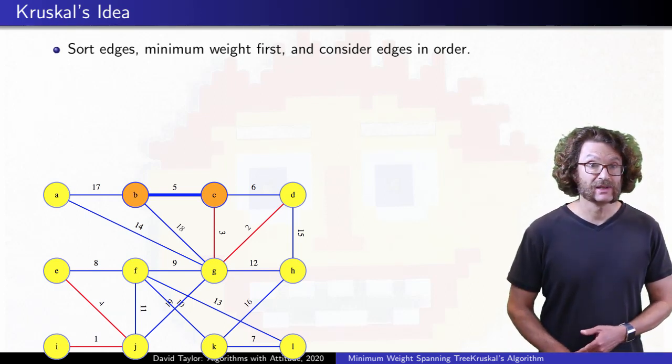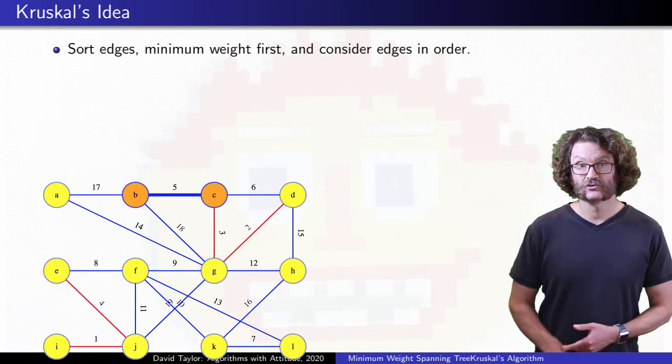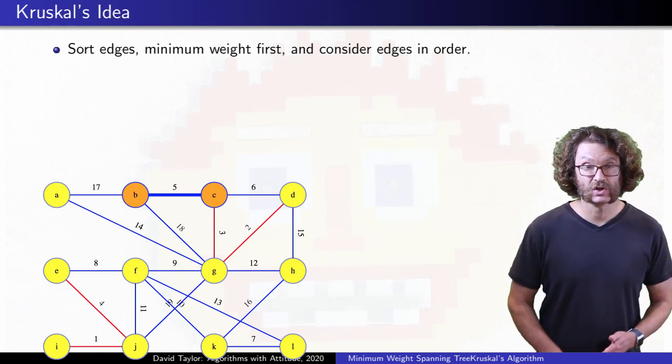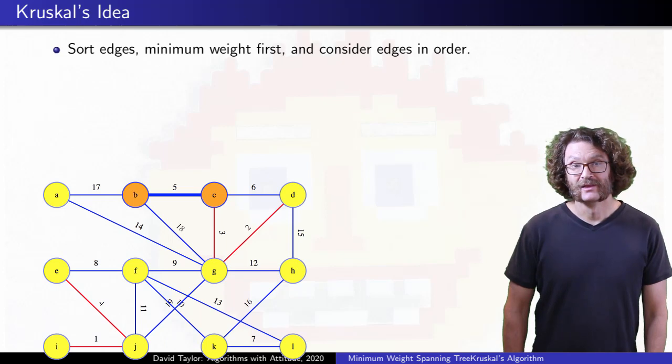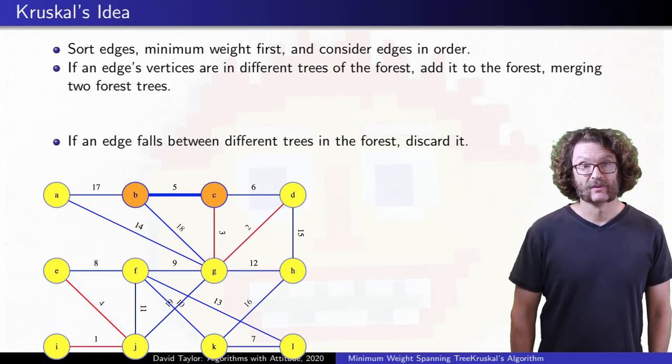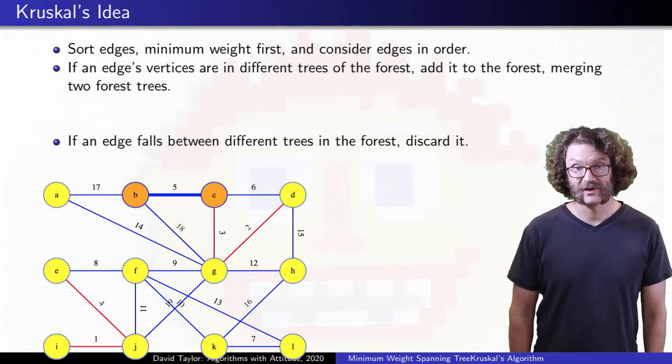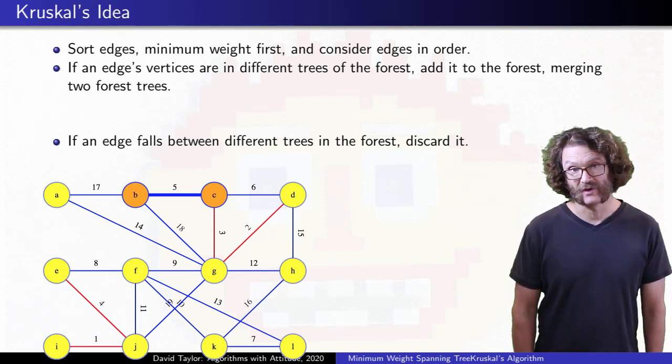The edge connects vertices B and C. If those two vertices are in different trees of the growing forest, the edge gets added to the Minimum Spanning Tree, otherwise it is discarded. In this case, it gets added, but we should justify that.